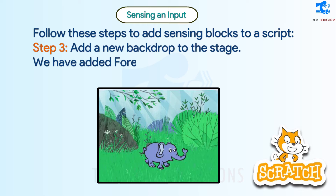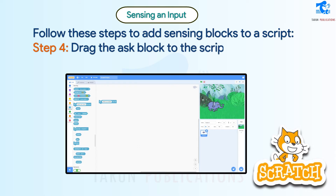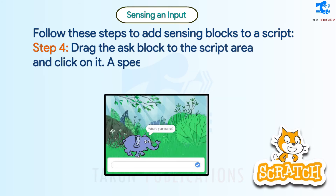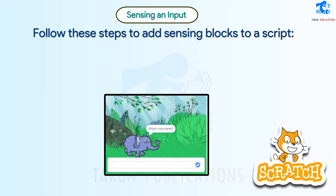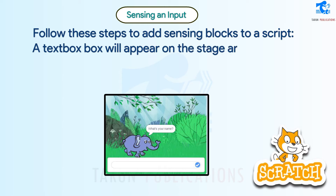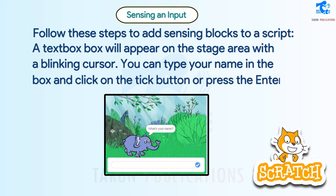Step 3 - Add a new backdrop to the stage. We have added Forest. Step 4 - Drag the Ask block to the script area and click on it. A speech bubble will appear on the elephant with the text 'What is your name?' A text box will appear on the stage area with a blinking cursor. You can type your name in the box and click the tick button or press the Enter key.